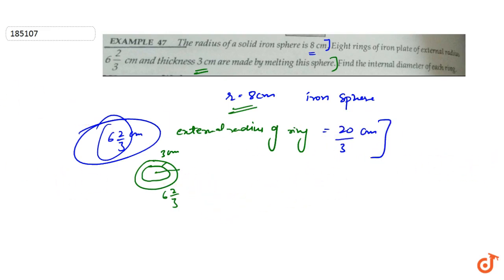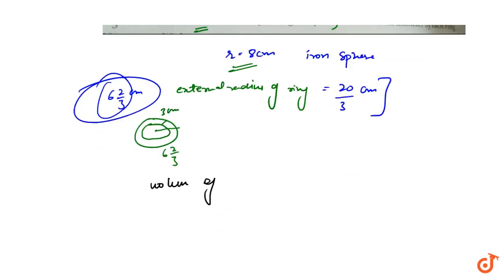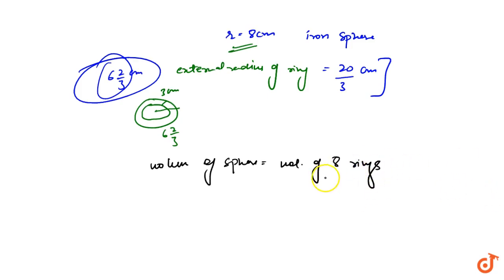Volume of solid sphere will be equal to volume of 8 iron rings. So volume of sphere will be equal to volume of 8 rings. So 8 into pi into thickness, the thickness will be multiplied, the external radius minus internal radius.